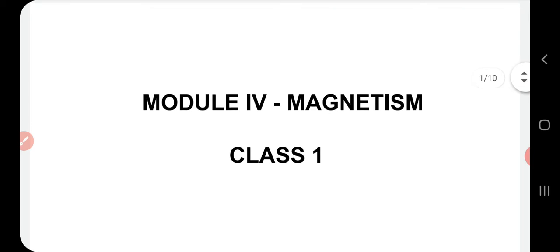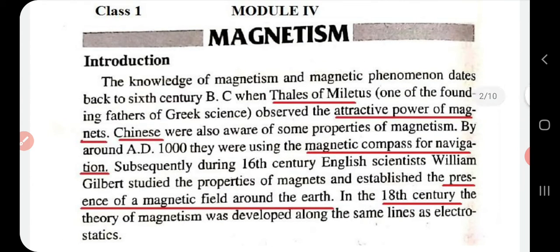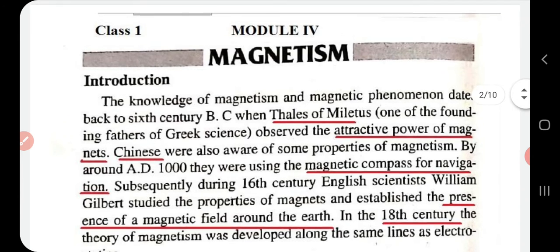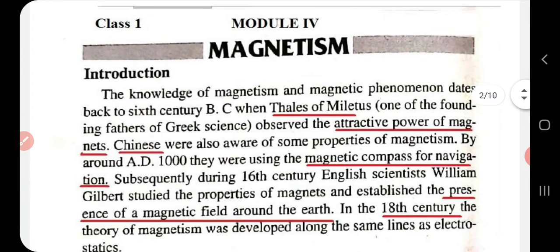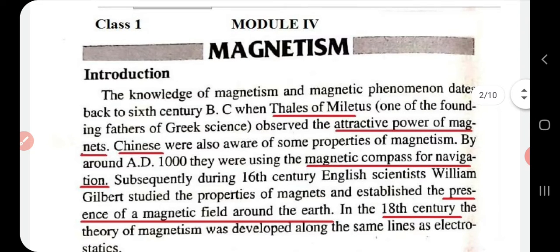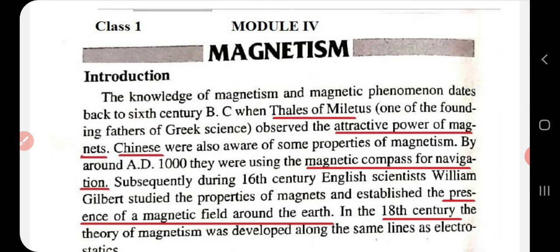As an introduction, the concept of magnetism and magnetic phenomena started in the 6th century BC when Thales of Miletus observed the attractive power of magnets. This particular discovery led to the field called magnetism, as magnets demonstrated an attractive power, opening up this new field.